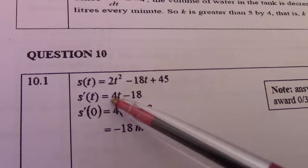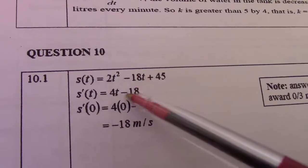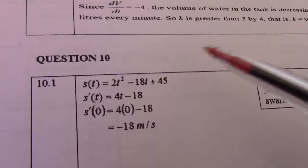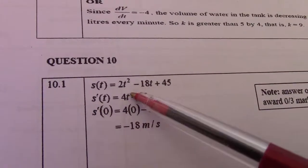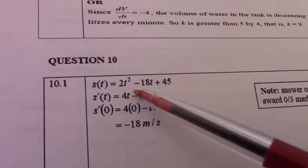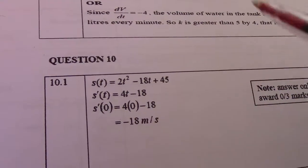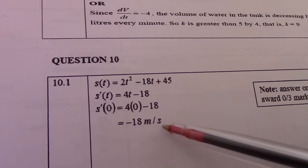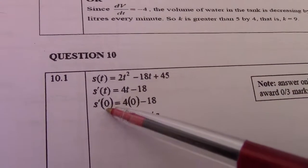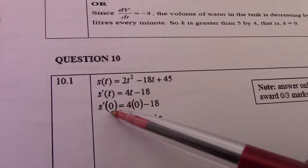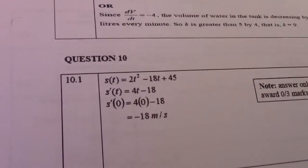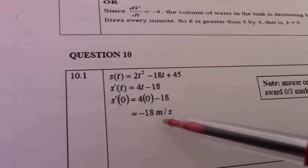2 times 2 gives me 4t. 1 times minus 18, minus 18, the rest falls away. So s'(0) gives me 4 times 0 minus 18 equals minus 18 meters per second. That's 0 because they said particle's initial velocity. At initial velocity, time is 0. There, minus 18 meters per second.